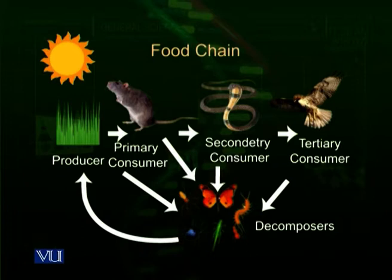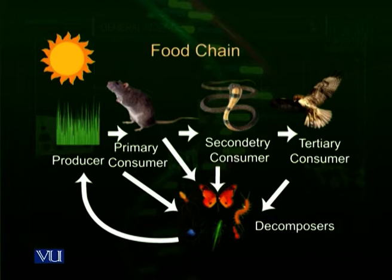This is a food chain: producer — a grass plant; primary consumer — a rat or other rodent; secondary consumer — the snake; and tertiary consumer — the hawk. Energy flows unidirectionally: from sunlight to the plant (the producer), from producer to the primary consumer (the mole or rat), from primary consumer to secondary consumer, and then to the tertiary consumer, the hawk.